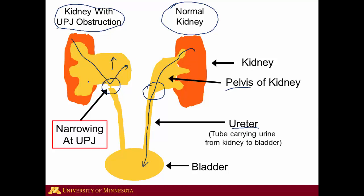The cause of this narrowing at the UPJ can be many things. It can be congenital — essentially present for your entire life — or it could be due to scarring from kidney stones or other trauma to the area. Finally, you can occasionally have narrowing at this area due to a cancer within the ureter. This is fairly rare and tends to happen as people age or in people who have a long smoking history.